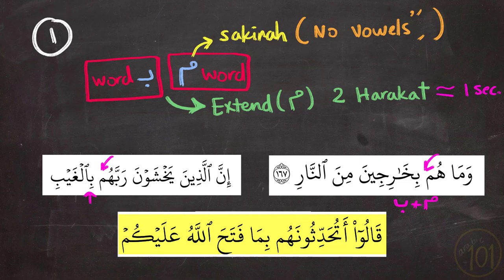So in the first example, we see that the Meem has nothing on top or under it. So this means it has Sukoon and is followed by a Ba', so that's why we extended the Meem for two Harakat. In the next example, the Meem is followed by a Ba', and the third example has the exact same story.